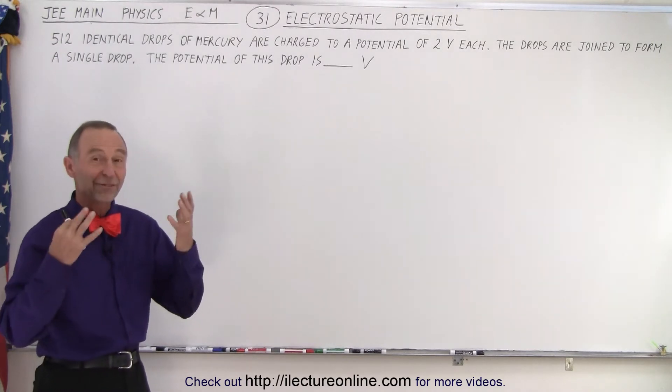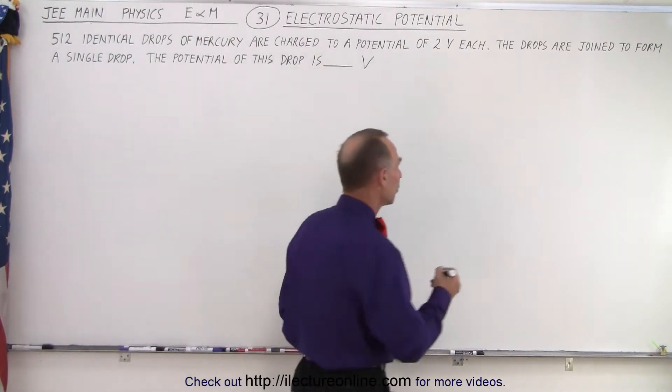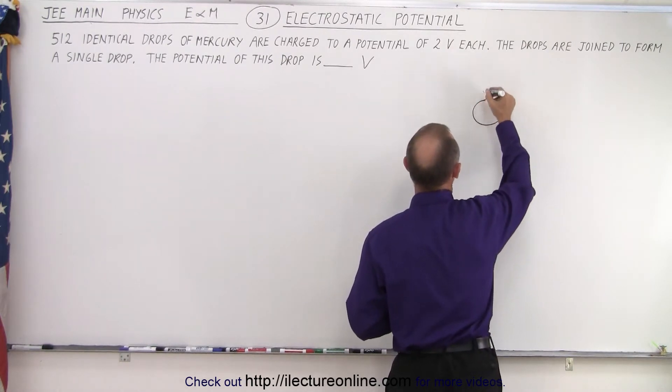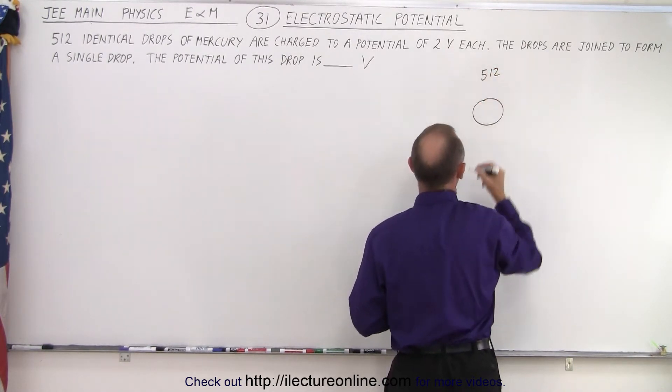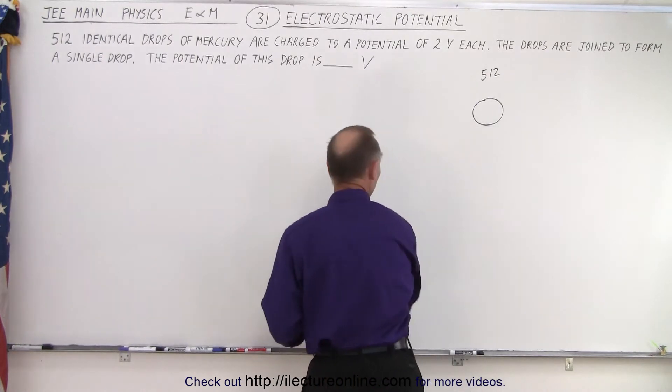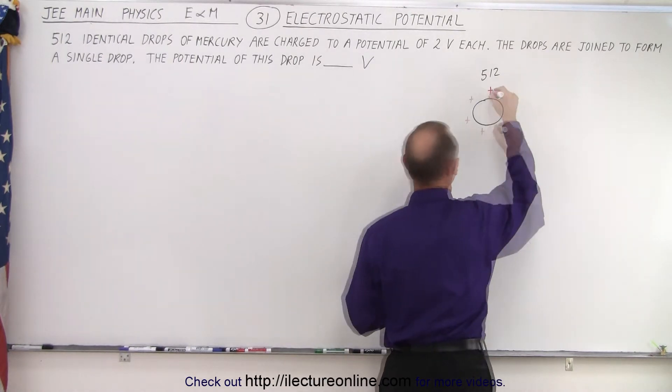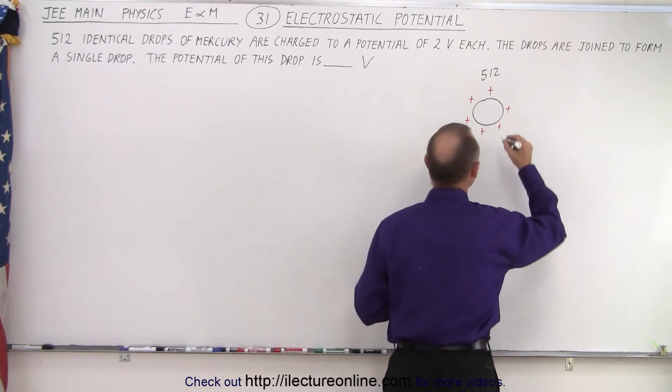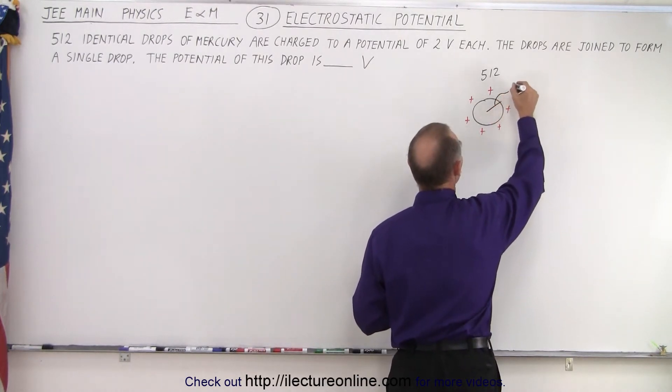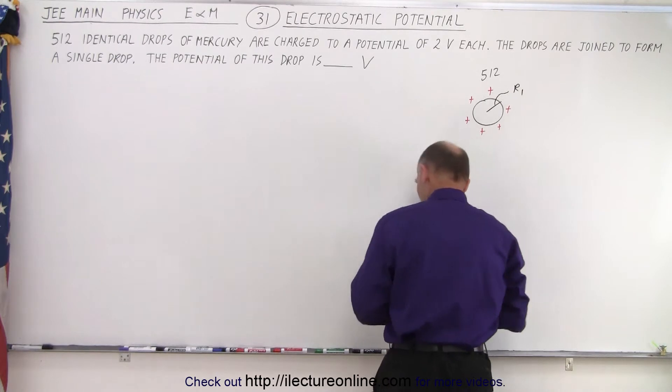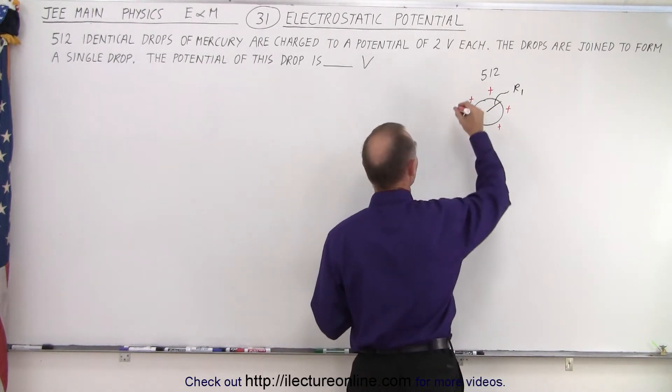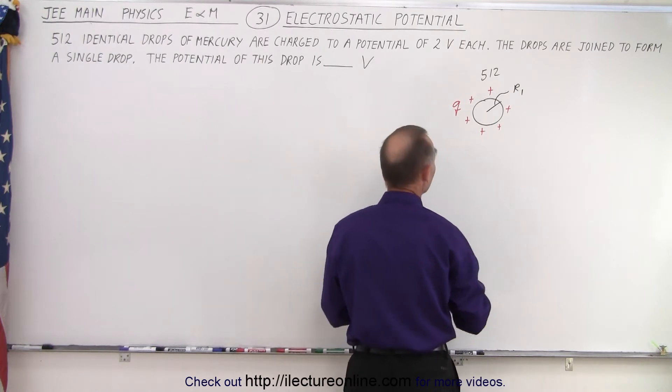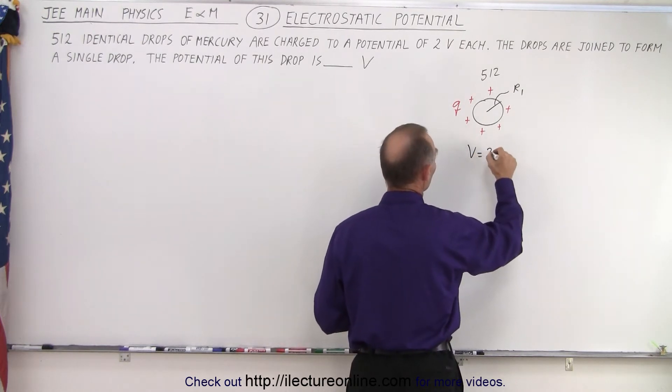So let's draw some pictures to get a feel of what's going on here. We have 512 small mercury drops. Each of them is charged. And we know that the radius there, let's call the radius R1 and the amount of charge we have on there, let's call it Q. And we know that the potential is equal to 2 volts.